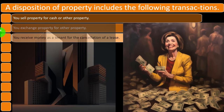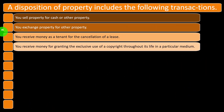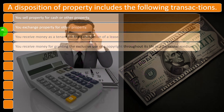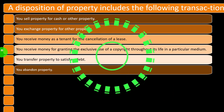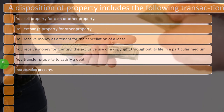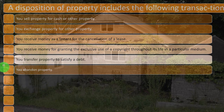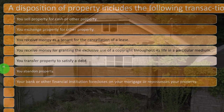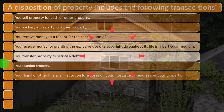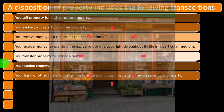You exchange property for other property. You receive money as a tenant for the cancellation of a lease. You receive money for granting the exclusive use of a copyright throughout its life in a particular medium — that's a specific situation where your asset is an intangible like a copyright. You transfer property to satisfy a debt — if you get paid by a reduction of a debt, you still received income because they reduced the debt. You abandon property — like a building or land you just walked away from — that's also a disposition. Your bank or other financial institution forecloses on your mortgage or repossesses your property, which is an involuntary disposition but still a disposition.